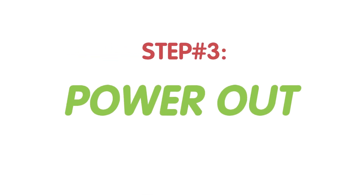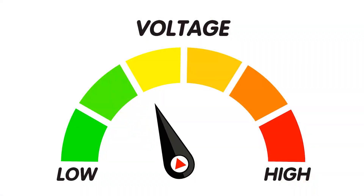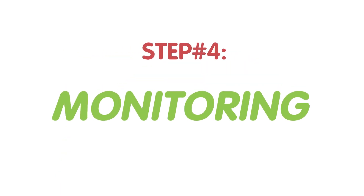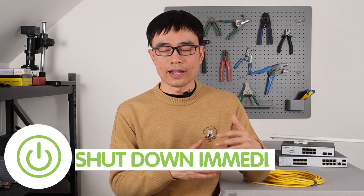The third step is power-up. After the PoE injector or switch verifies and classifies your edge device, it will start sending power over the Cat5e or Cat6 Ethernet cable, increasing the voltage from low to high. The fourth step is monitoring: the PoE switch or injector will monitor the whole power system, and if there are any abnormal conditions like overload or short circuits, it will shut off the power immediately.